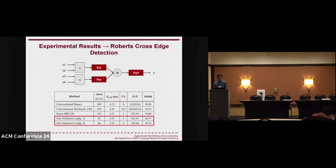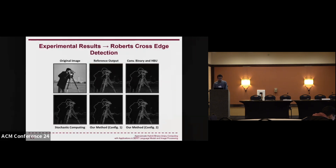The next application we implemented was the Robert Karras edge detection algorithm. In terms of PSNR for accuracy, the second configuration of our method reaches similar results to the exact implementation and reduces hardware cost by 20% compared to ExactHPU. Here are the output results for the edge detection algorithm — these two are our method's outputs and this is the floating-point implementation.